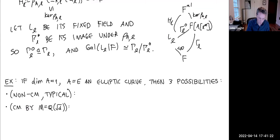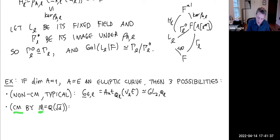In the non-CM case, the monodromy group is the whole GL_2(Q_ℓ). In the CM case — complex multiplication defined over F by a totally imaginary quadratic extension M of Q, so d is negative — you get something decidedly smaller, isomorphic to GL_1(M_ℓ), where M_ℓ is a 2-dimensional Q_ℓ vector space.